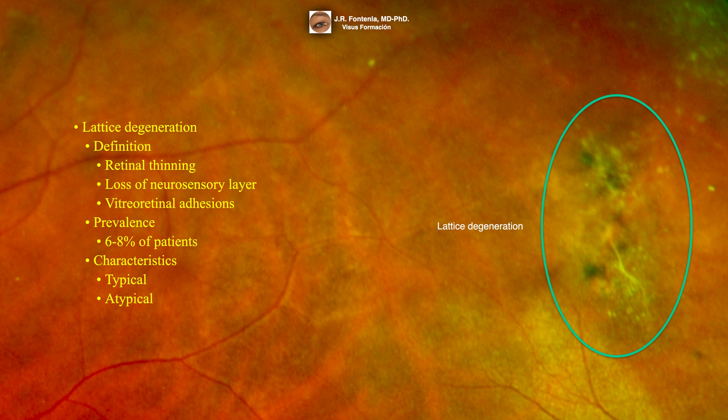In the typical form we find well-delineated thinning with white cross lines — this is the form presented here. The atypical form is found adjacent to vessels in a radial pattern. We can find oval or linear patterns of lesions, maybe one lesion or multiple, and they may have yellow deposits, pigment, atrophic holes, or retinal tears.